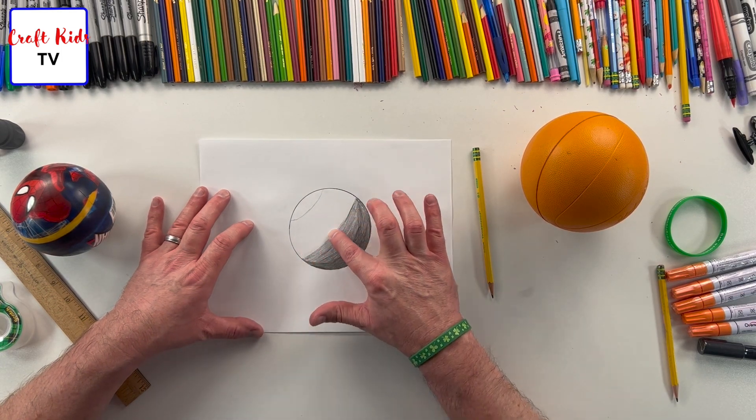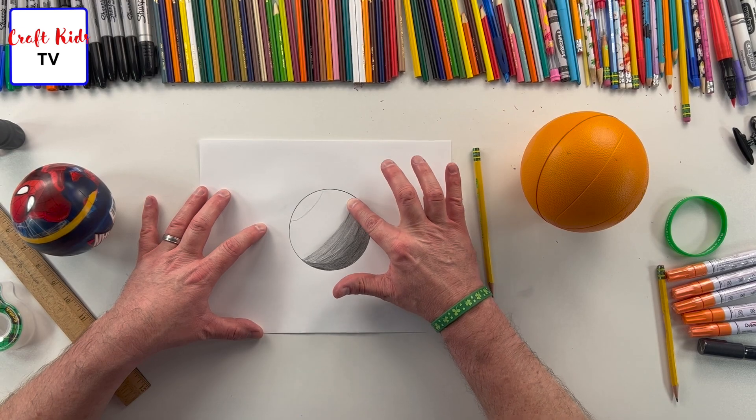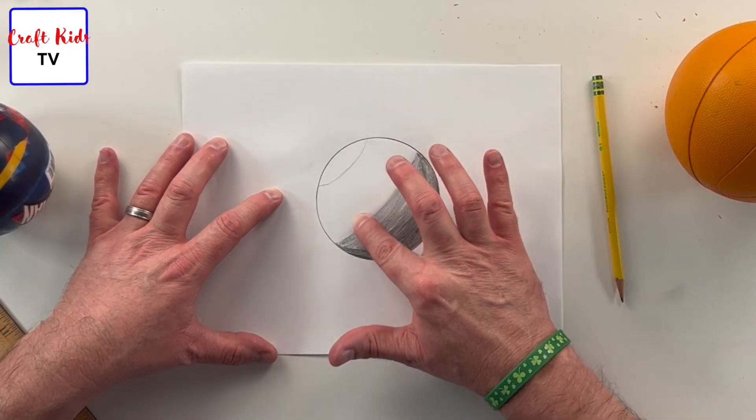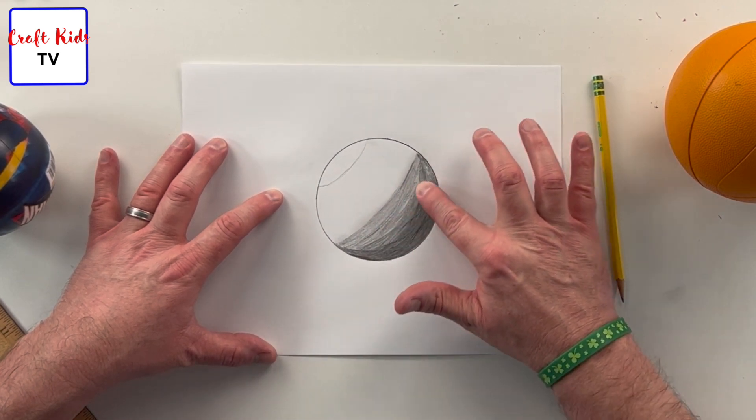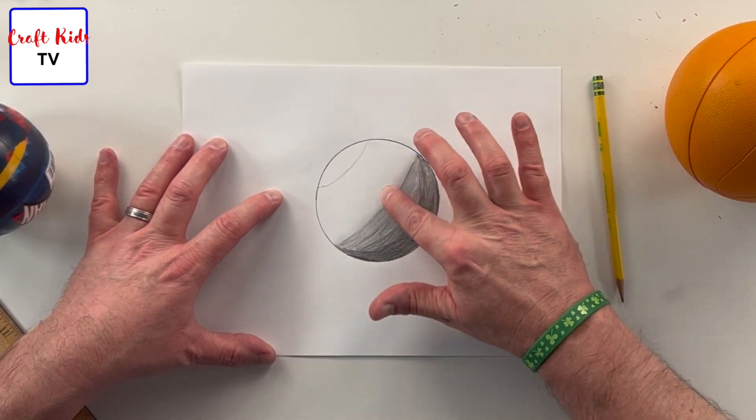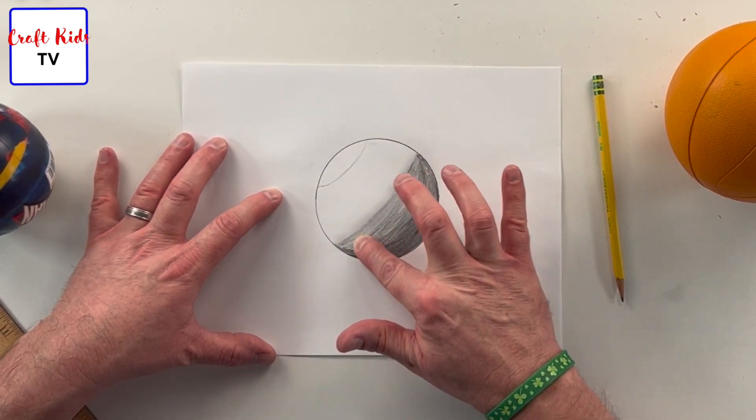This is simply a pencil technique. What you can do is you can take your fingers if you don't mind getting it a little smudgy, and you can just take whatever you shaded and just rub your finger over it.